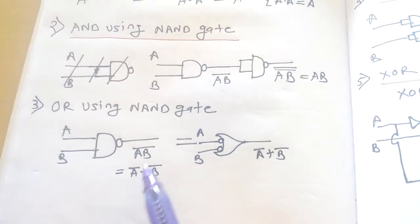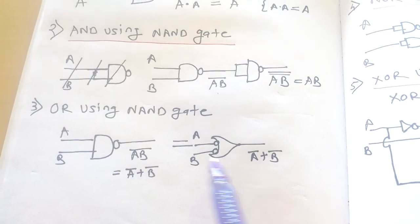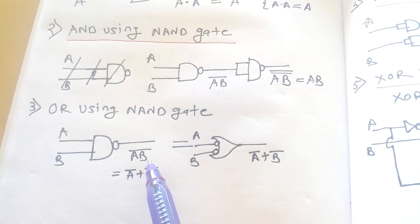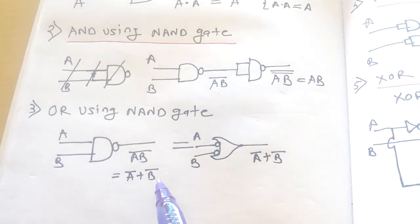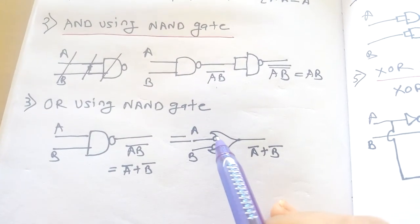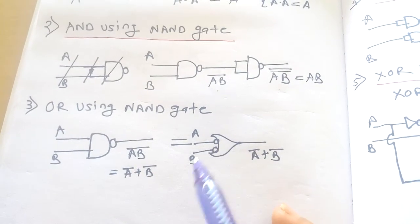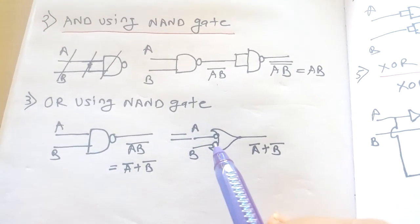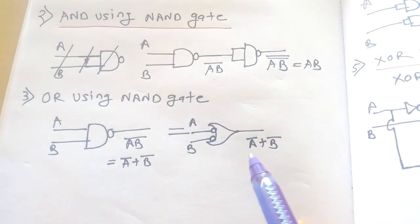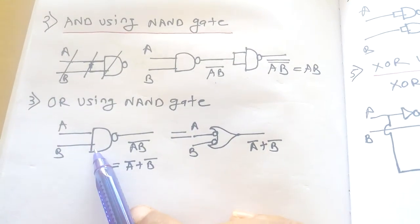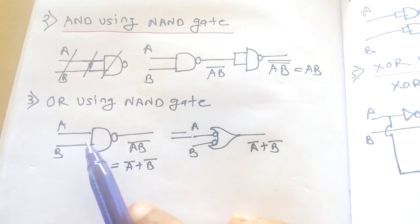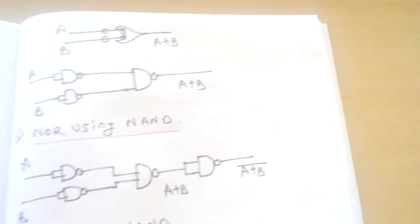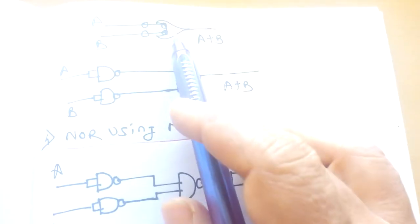Let us see how to construct the OR gate using NAND gate. You should remember the identity: AB bar equals A bar plus B bar. As per De Morgan's law, NAND gate output AB bar equals A bar plus B bar. So a bubble is inserted on input A and a bubble on input B — each bubble represents a NOT gate — followed by an OR gate. This means NAND gate is equivalent to a bubbled OR gate.